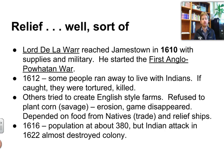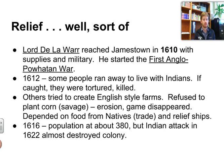When settlers came over from England, they tried to create English-style farms — that's what they knew. Unfortunately, those didn't work so well in the New World. The farms were partially plagued by problems with erosion. They didn't plant crops that would do well here, like corn — again, that's what the natives plant. They over-hunted and over-logged, eventually depending on food from native people through trade and on relief ships just to survive. Despite their best efforts, by 1616 the population had dwindled to about 380 people.